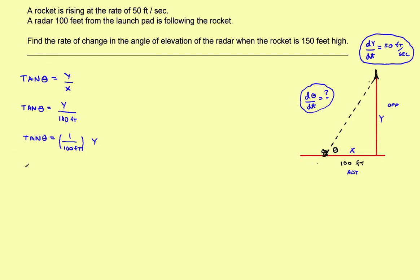Now that we've got the equation, let's find the derivative. The derivative of the tangent is secant squared. Using the chain rule, don't forget to add dθ/dt — the derivative of the outer part times the derivative of the inner part. That's going to equal the constant 1/100, and the derivative of y would be 1, but don't forget to add dy/dt. So you've got: sec²(θ) · dθ/dt = (1/100) · dy/dt. Now take the secant squared and move it to the bottom on the right side.